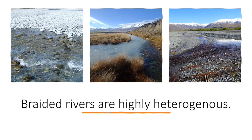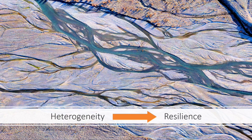In between those two channel types, you've pretty much got everything else — shallow channels that are refilling, drying up, deep, shallow, swift, or slow. Essentially, there's a lot more habitat available, and this is important because habitat heterogeneity can contribute to resilience of the whole ecosystem.